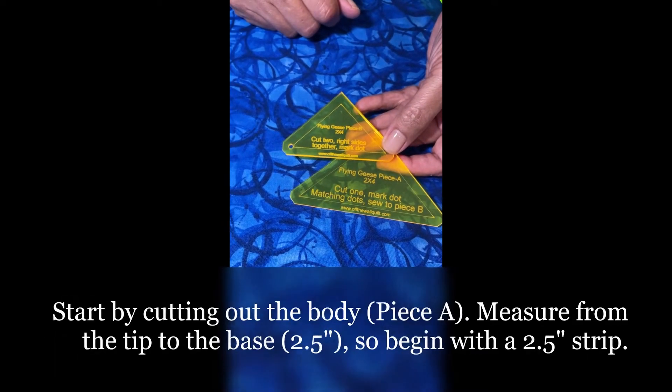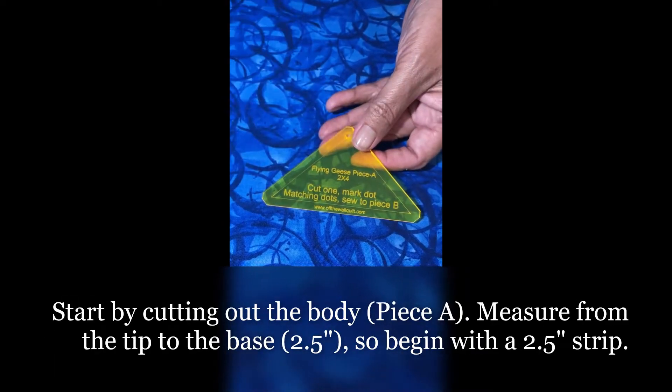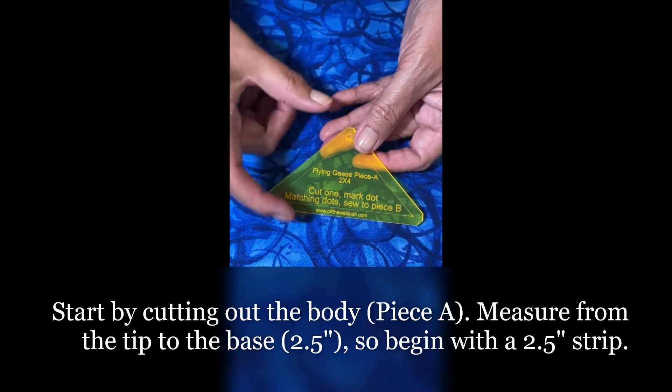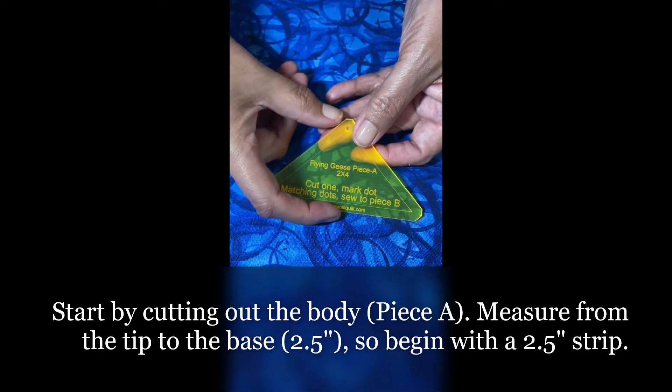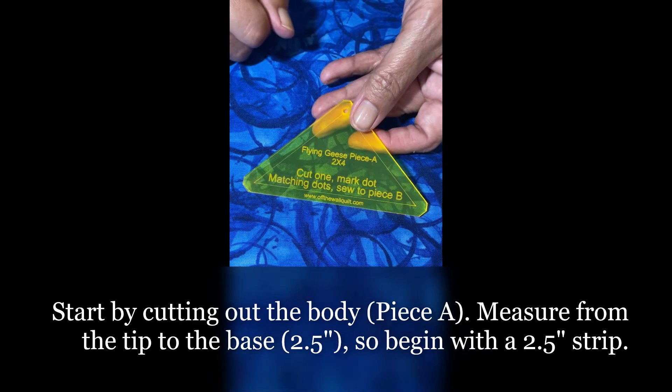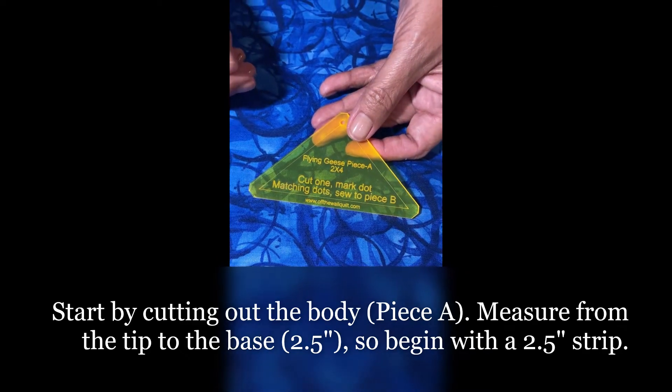I'm going to start by cutting the body or the piece A of my flying geese. I measure from the tip here to the side over here, it's 2 1⁄2 inches, so I start with a 2 1⁄2 inch strip.